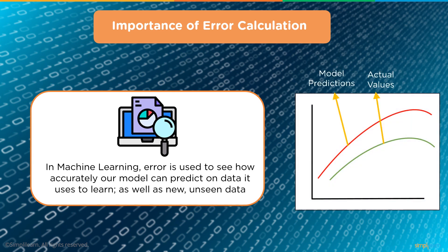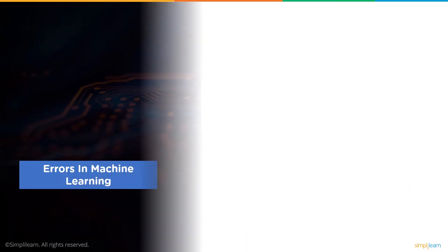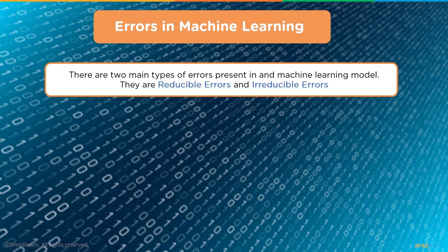Here we have a chart showing model predictions, actual values, and the error — the error being the difference between the two. This can be a plus-or-minus thing in regression models, or how many mispredicted values in classification. Based on our error, we choose the machine learning model which performs best for a particular data set.